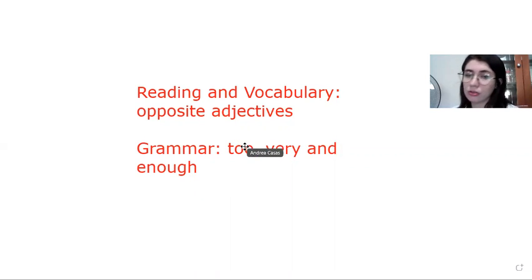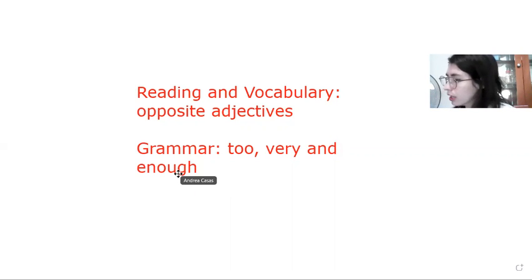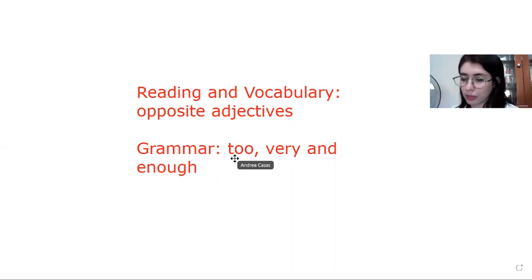Too, demasiado. Enough, suficiente. Cuando le agregamos el not enough, es que no es suficiente. Insuficiente. El too va antes de los adjetivos. Por decir, it's too long, es demasiado largo. Y el enough viene después del adjetivo. Por ejemplo, it's funny enough. Es suficientemente divertido. El enough va después del adjetivo.